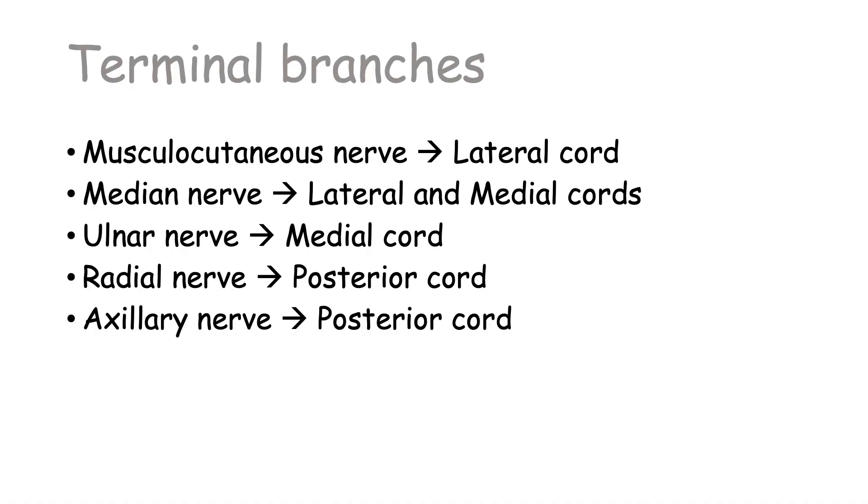So here we have a little summary of the terminal branches. The musculocutaneous nerve leaving from the lateral cord, the median nerve from the lateral and medial cords, the ulnar nerve from the medial cord, and then the radial and axillary nerves both branch off of the posterior cord.